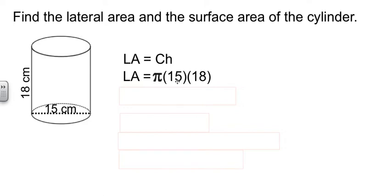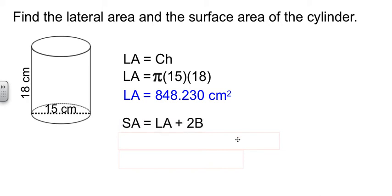So π times d, π times 15 times 18, gives me 848.230 square centimeters.